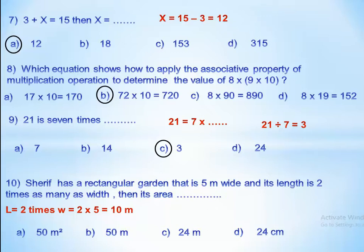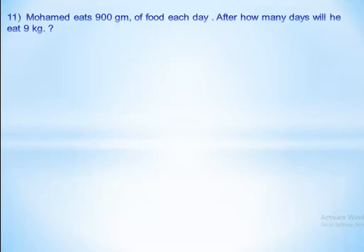So the length equals 2 times 5 equals 10 meters. We have length equal 10 and width equal 5. The area equals length times width, which is 10 times 5 equals 50 square meters.